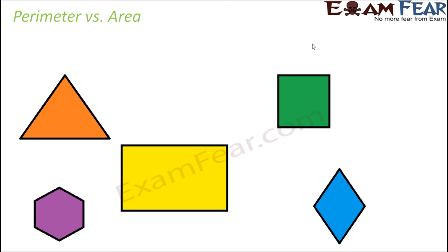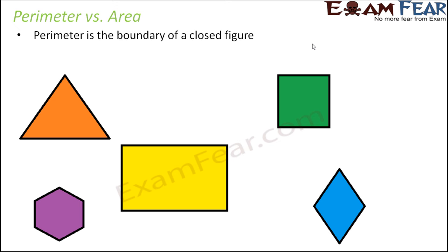The first thing we should clarify is how perimeter and area are different from each other. When we talk about perimeter, it is the boundary of a closed figure. Here on the screen you see five different closed figures. For example, a triangle has three line segments forming a closed shape, with the orange colored region being the space enclosed within it — that is a closed figure.